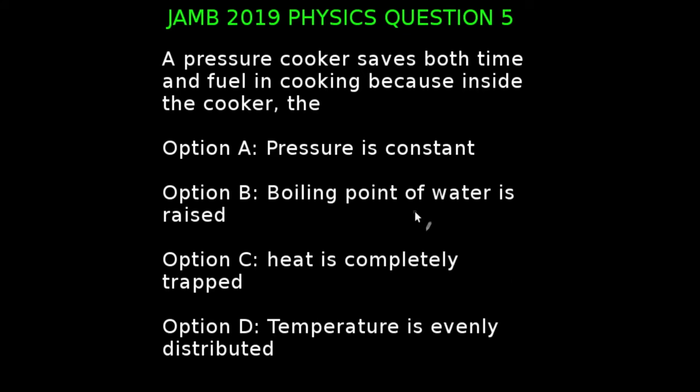JAM 2019 physics question number 5. A pressure cooker saves both time and fuel in cooking because inside the cooker: a, pressure is constant, b, boiling point of water is raised, c, it is completely trapped, and d, temperature is evenly distributed. Pressure cooking is simply a process of cooking using high pressure in a sealed vessel called pressure cooker. This high pressure tends to limit boiling and increases the cooking temperature above 100 degrees Celsius.